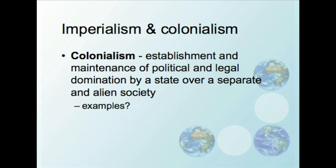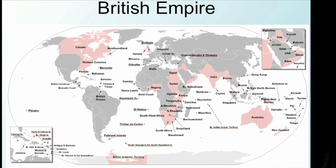We can define colonialism as the establishment and maintenance of political and legal domination by a state over a separate and alien society. The biggest example is the British Empire, which was really in its heyday in the 1920s. At that point, people would say the sun never set on the British Empire because they had holdings around the world.